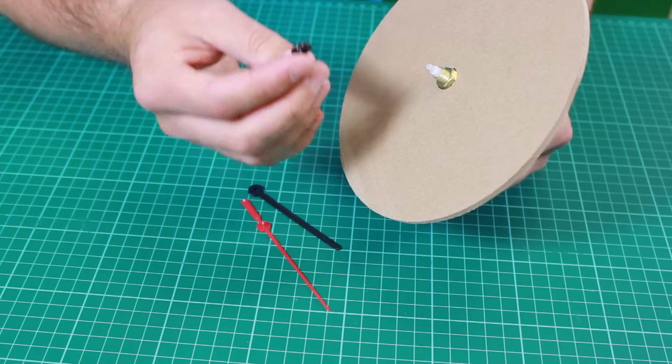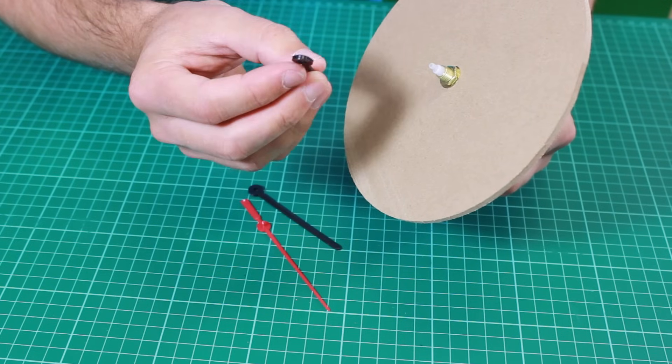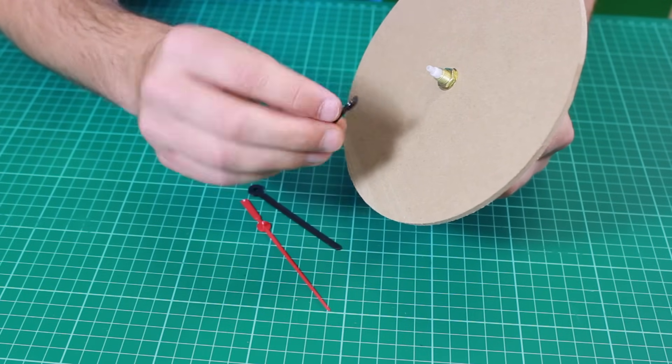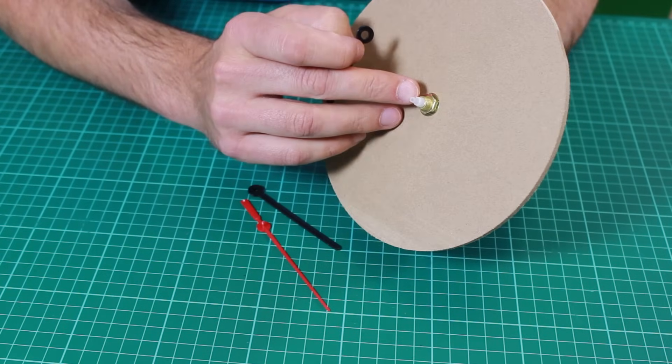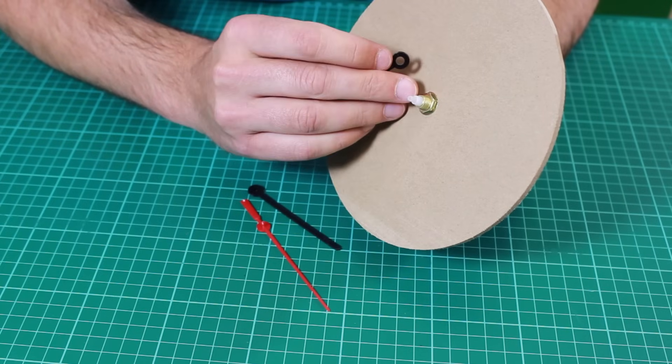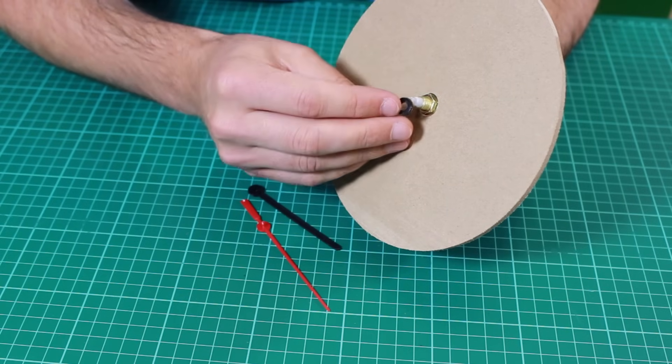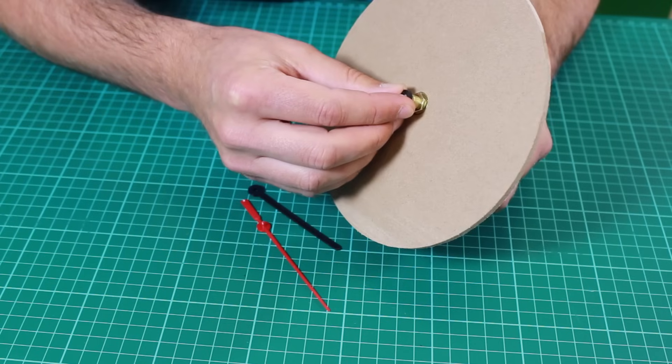We then take the clock hands. As you can see, we start with the hour hand and this has the bigger hole. When we put it onto the clock movement, we can see that there's concentric plastic tubes and the hour hand pushes onto the outer one of these.